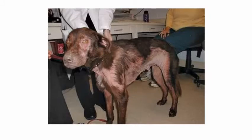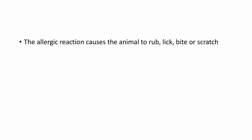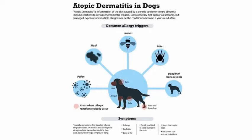Now coming to atopic dermatitis or allergic dermatitis. This is a picture of a dog with atopic dermatitis. It is a pruritic skin disease — an allergic reaction can occur when an animal inhales airborne substances or ingests a substance to which they are sensitive. The allergic reaction causes the animal to rub, lick, bite, or scratch. Different causes of allergy can be mites, insects, pollen, or another animal bite.